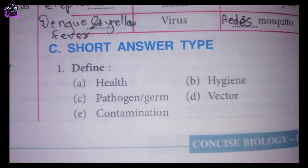Question C, short answer type. First one: define the following terms. A. Health. B. Hygiene. C. Pathogen or Germ. D. Vector. A. Contamination.